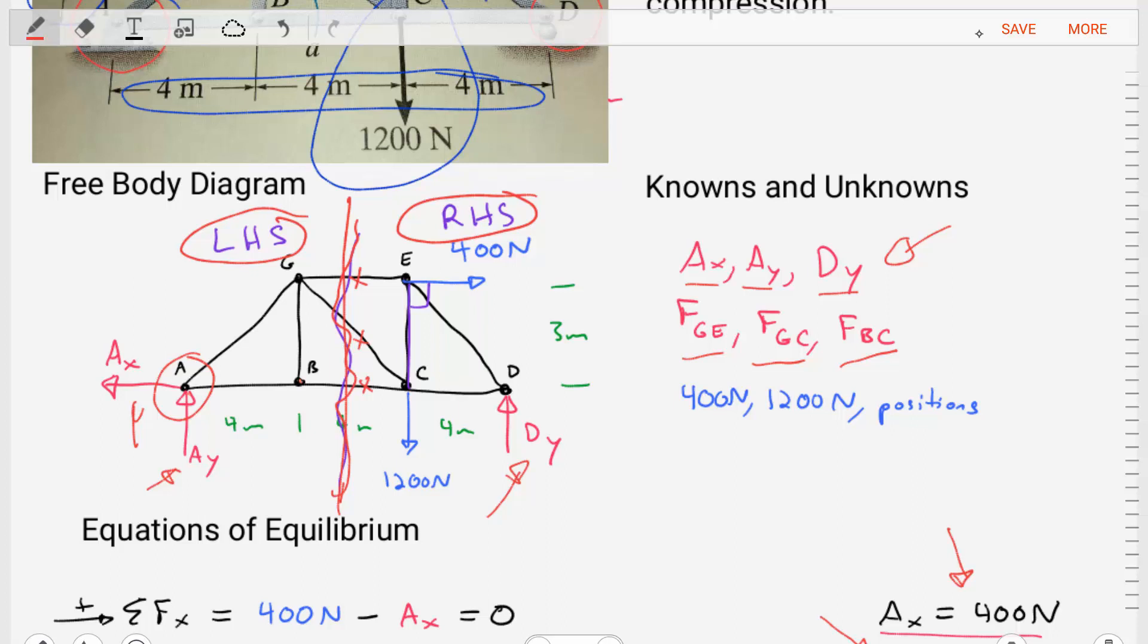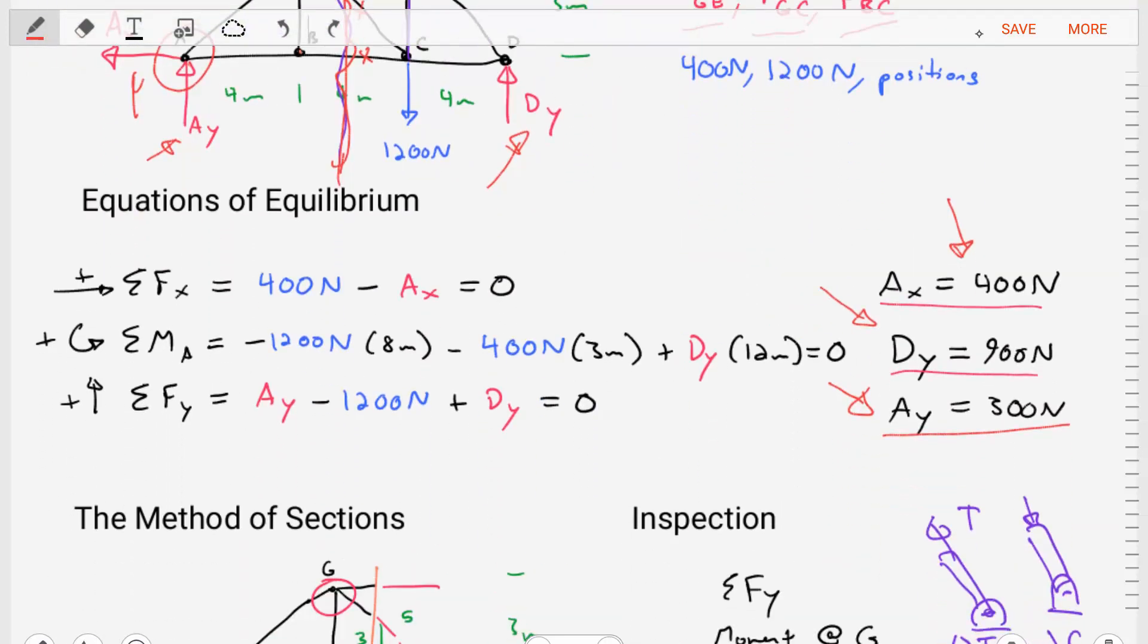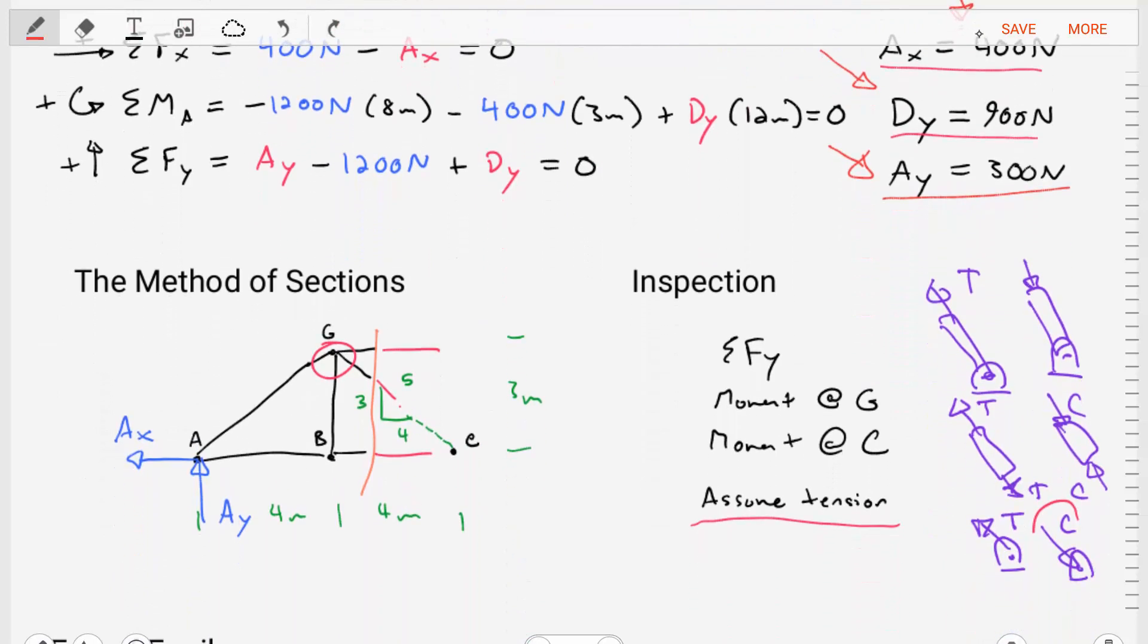So, the choice that we make between the two is usually based on which one will give us easier equations to solve, which one is going to be a little easier to work with. So, in this case, we are going to go with the left-hand side of this free-body diagram.